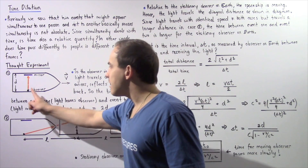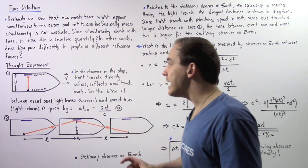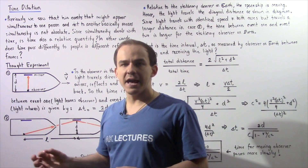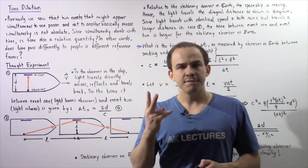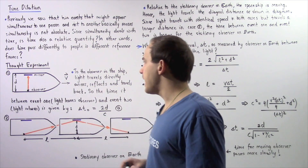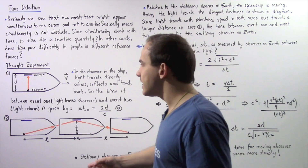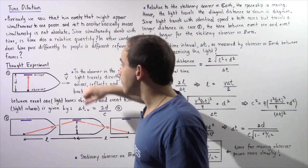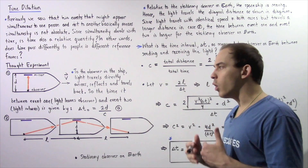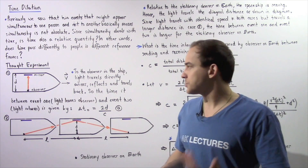The light travels across to the mirror, reflects, and travels back. When the beam of light returns to that observer, that is event number two. So we have two different events taking place within this reference frame. The question is: how long will it take that light to travel from the observer to the mirror and back? In other words, what is the time between event number one and event number two?